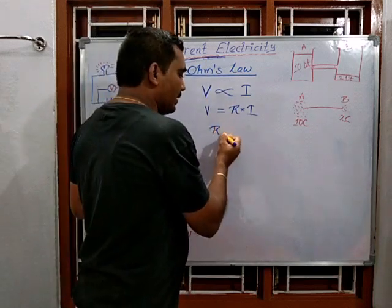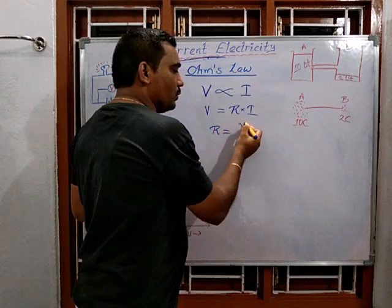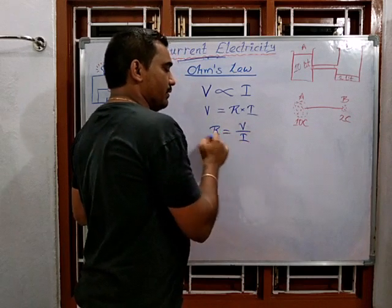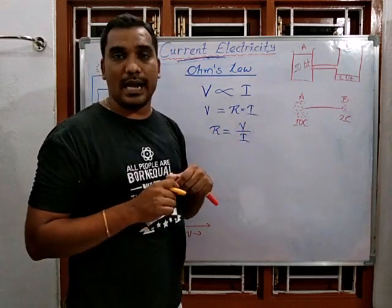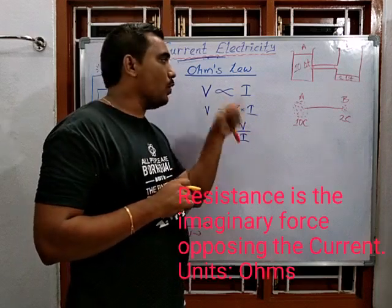The formula from this gives R is equal to V divided by I, which is always a constant.